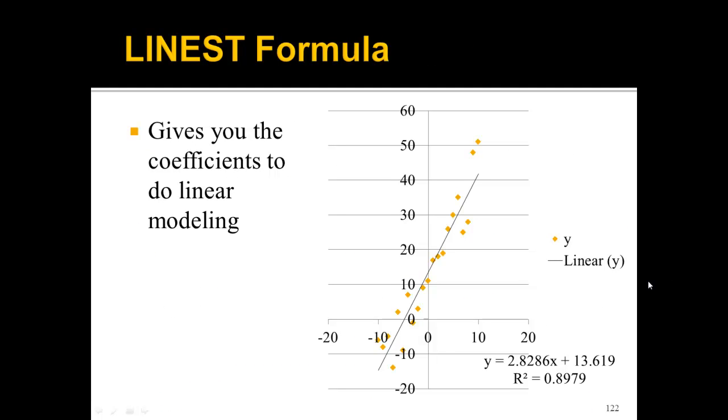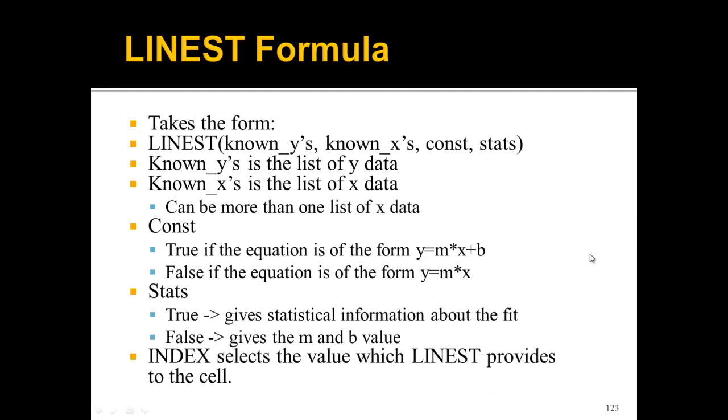So now let's look at the LINEST formula. We've seen a lot of graphs like this where we've been doing linear modeling. But how do we really get these coefficients into Excel? We do that with the LINEST formula. The LINEST formula takes the form: LINEST(known_y's, known_x's, const, stats). So what are all these known y's, known x's, const, and stats?